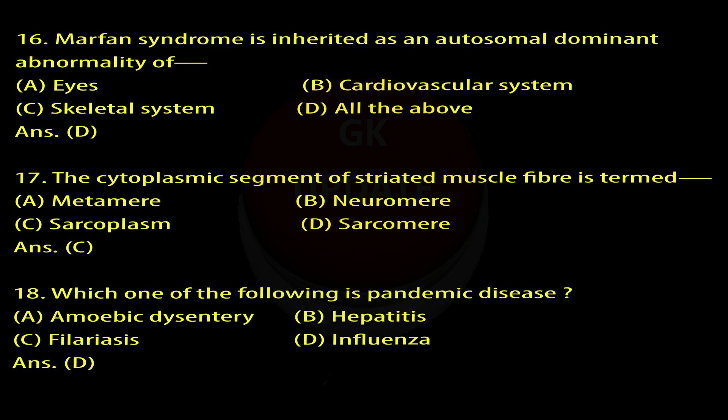Question 16: Marfan syndrome is inherited as an autosomal dominant abnormality of — A. Eyes, B. Cardiovascular system, C. Skeletal system, D. All the above. Answer: D.